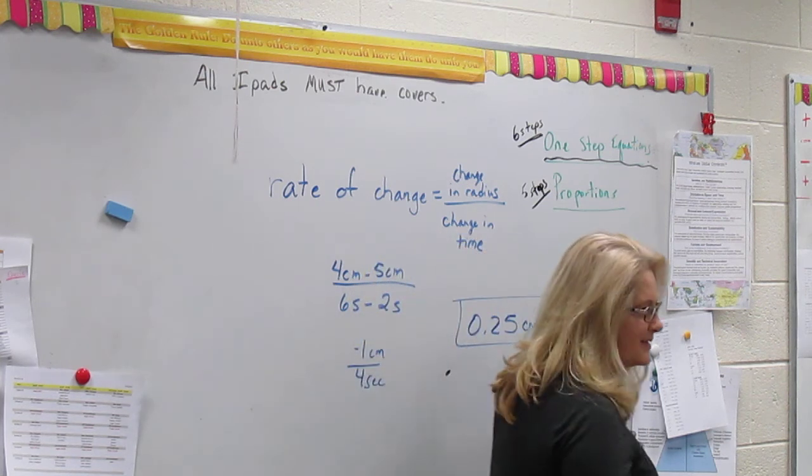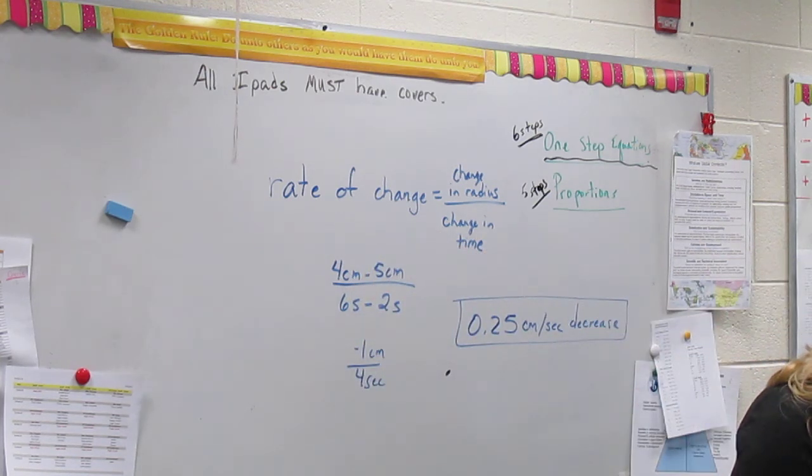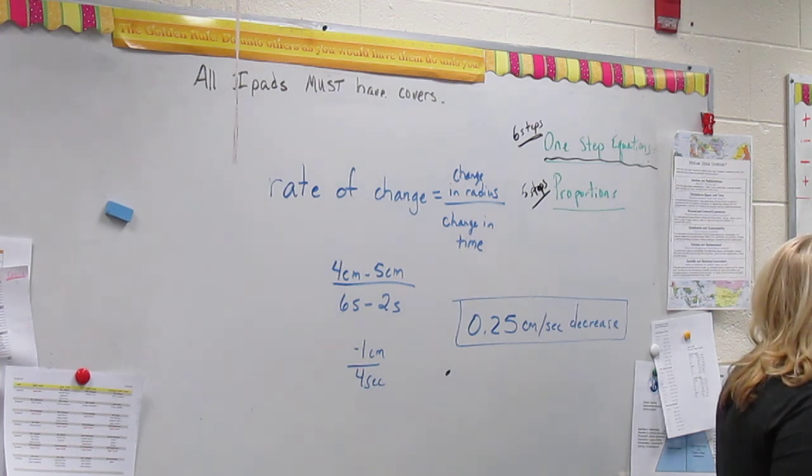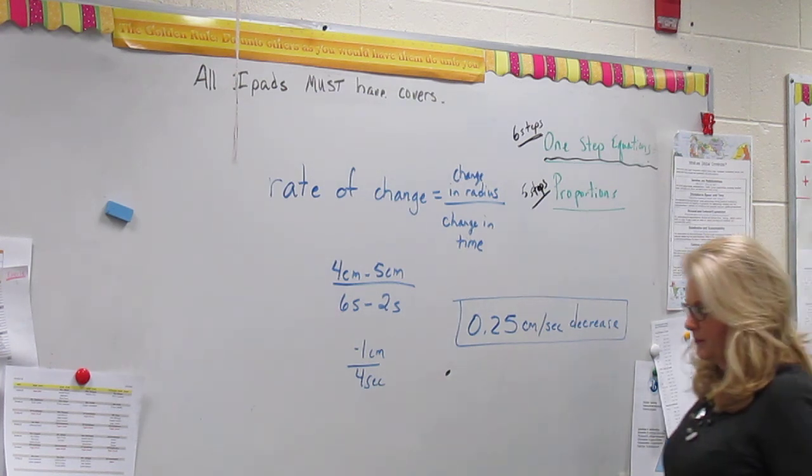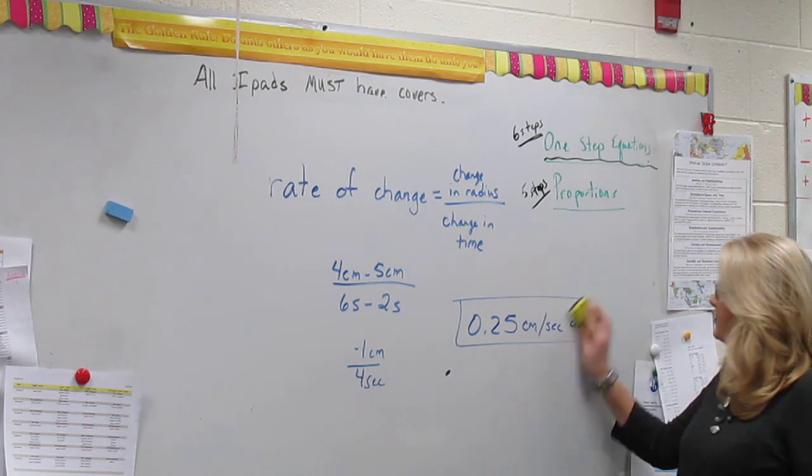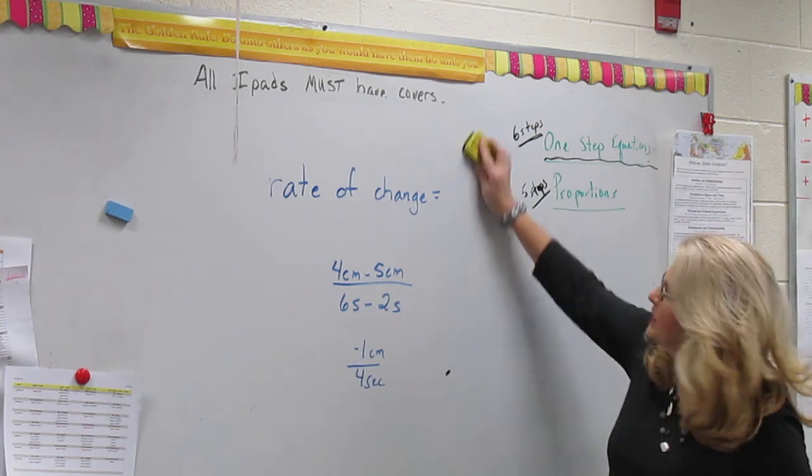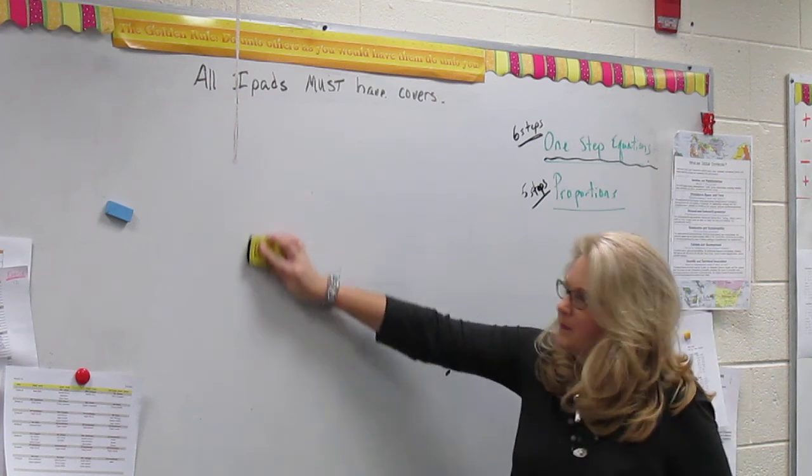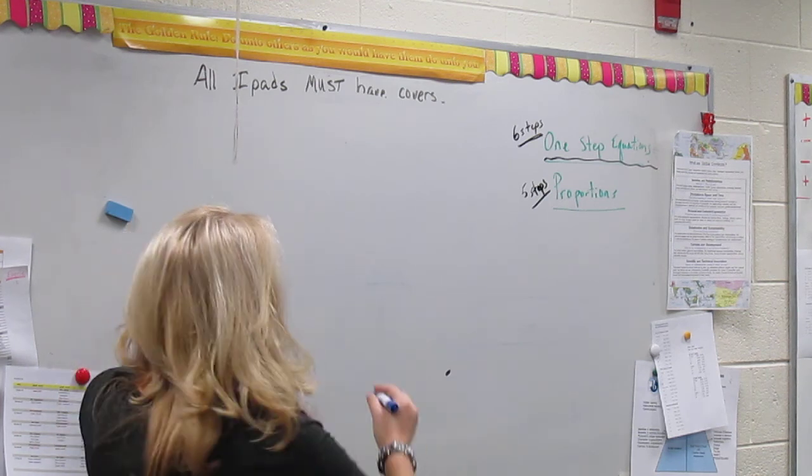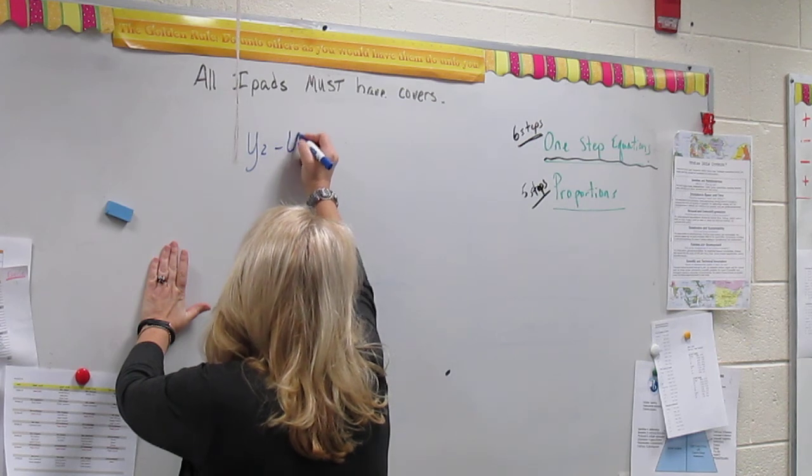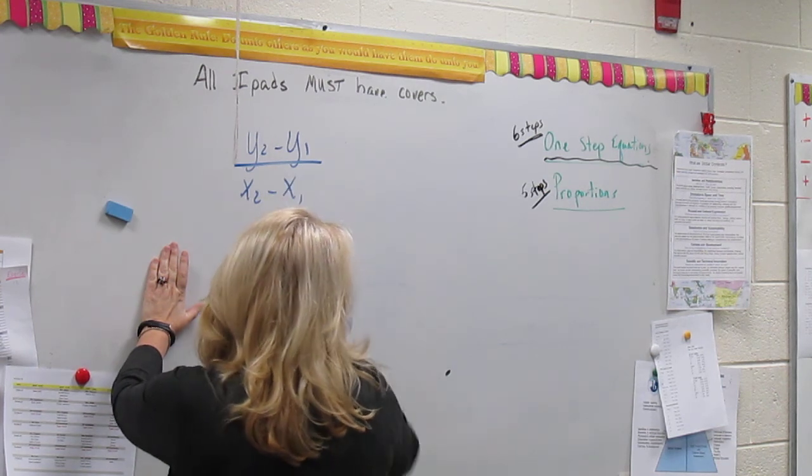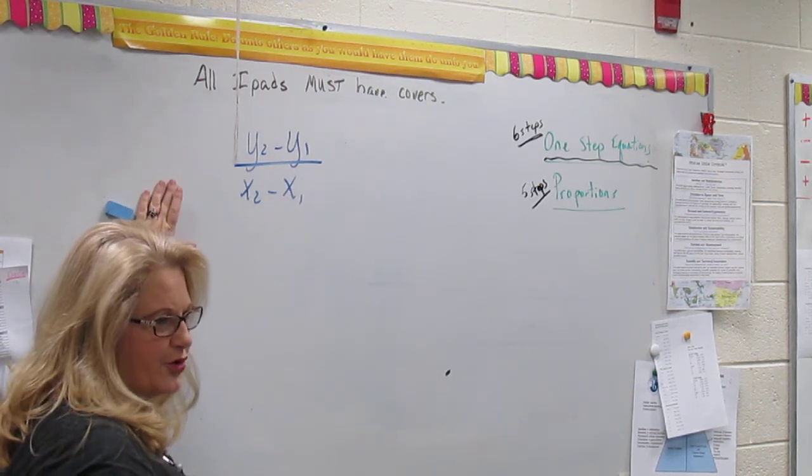That circle is getting smaller. Any questions about that example? Okay, let's look at 2. Use the graph above now, and find the constant rate of change for circle 2, and then interpret its meaning. Circle 2. So think about that for a minute. We are going to do it together. Let me get the door open. Okay, there's a formula that will help you with this. Are you ready? Y2 minus Y1 over X2 minus X1. This is going to help you find the rate of change.